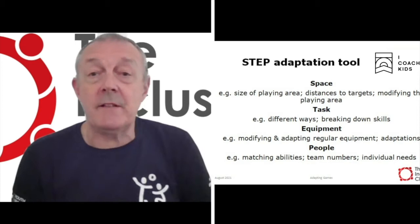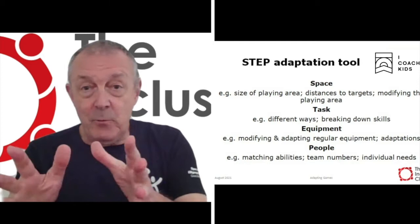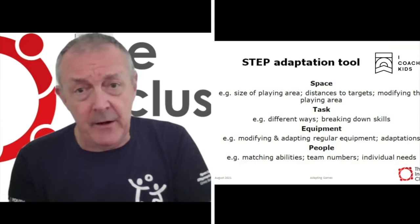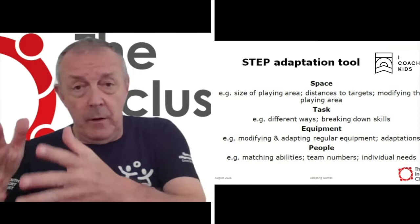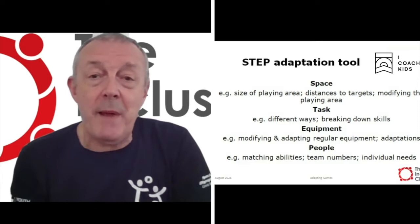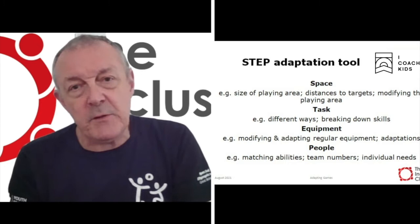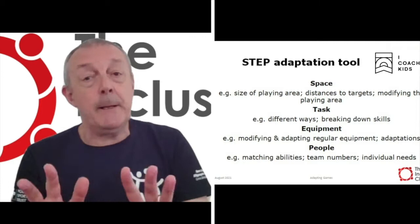The third part of the STEP adaptation tool is Equipment. We can use regular equipment in a modified way, make adaptations to regular equipment, or use specifically adapted equipment, or create modified and adapted equipment from materials we may have to hand around the home or wherever we're working. So we can apply changes to equipment in lots of different ways.